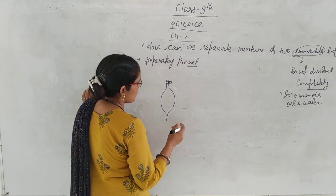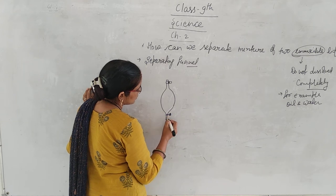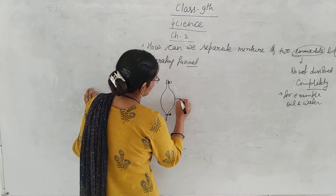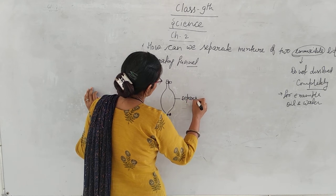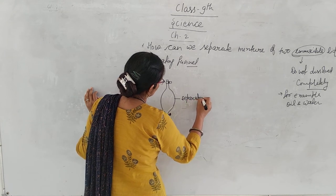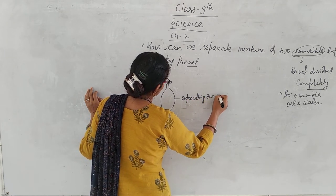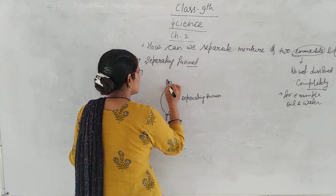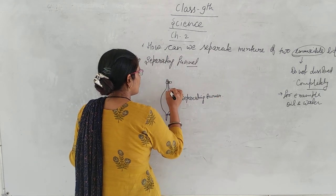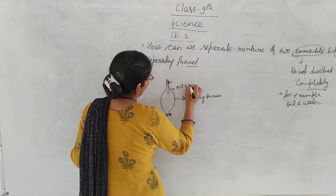So this is a separating funnel. How can we separate using it? There is also a knob on it. We add the mixture of oil and water into the separating funnel.